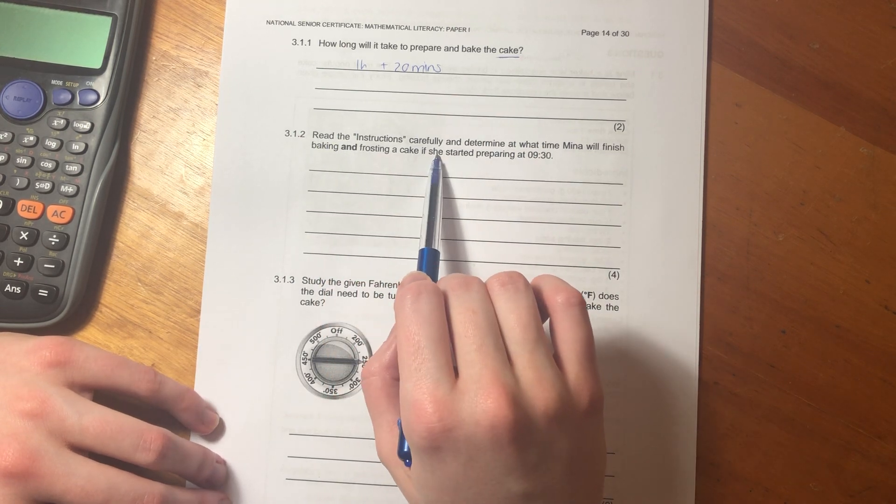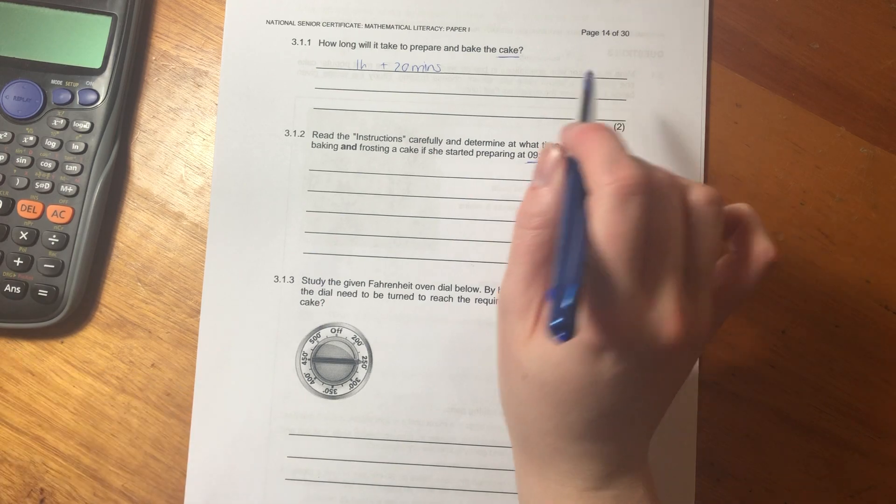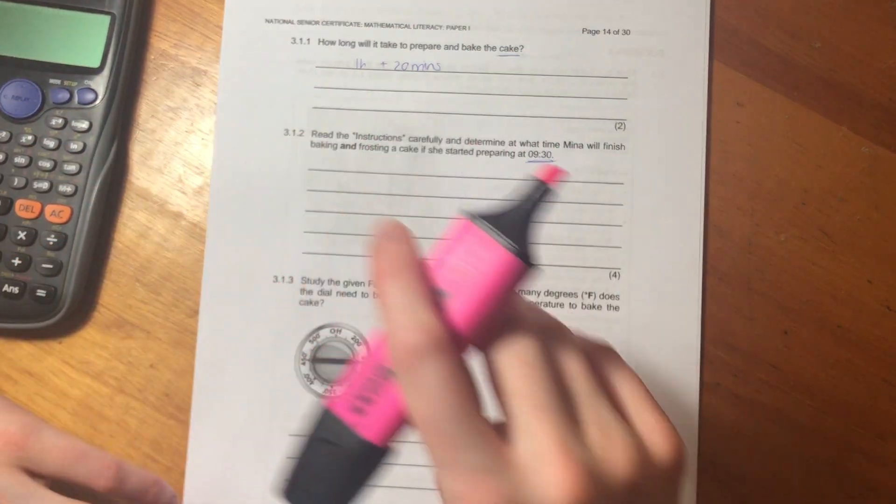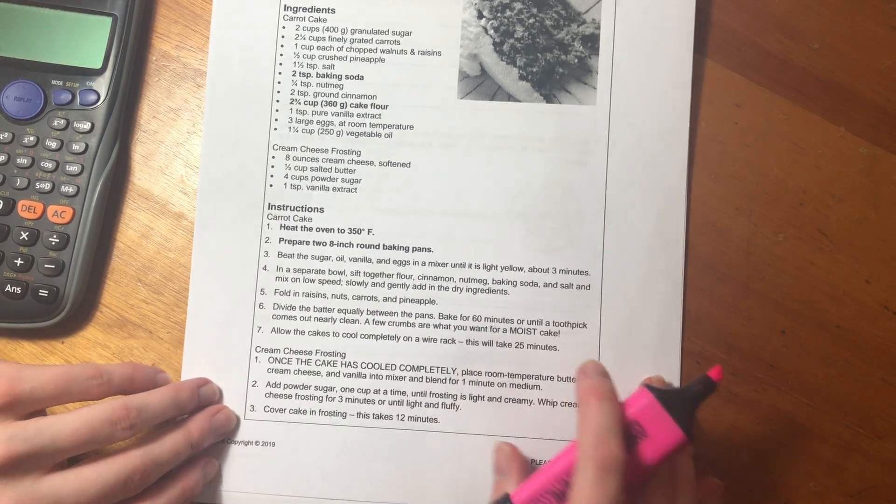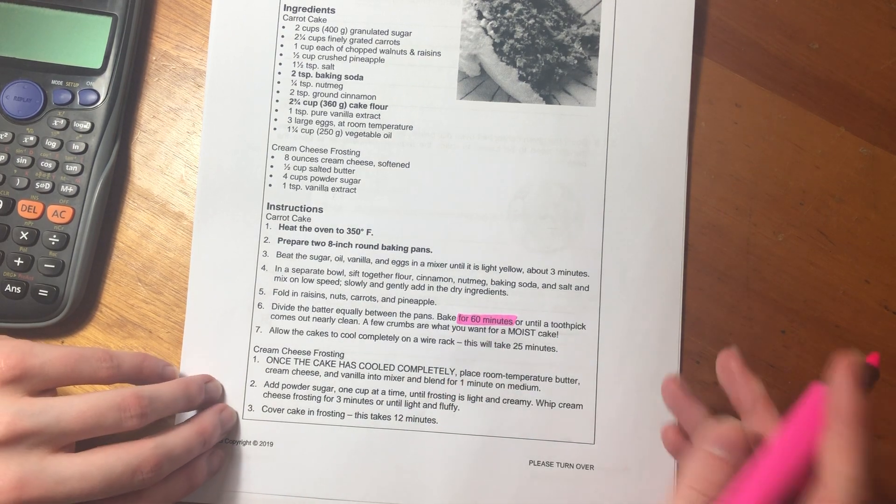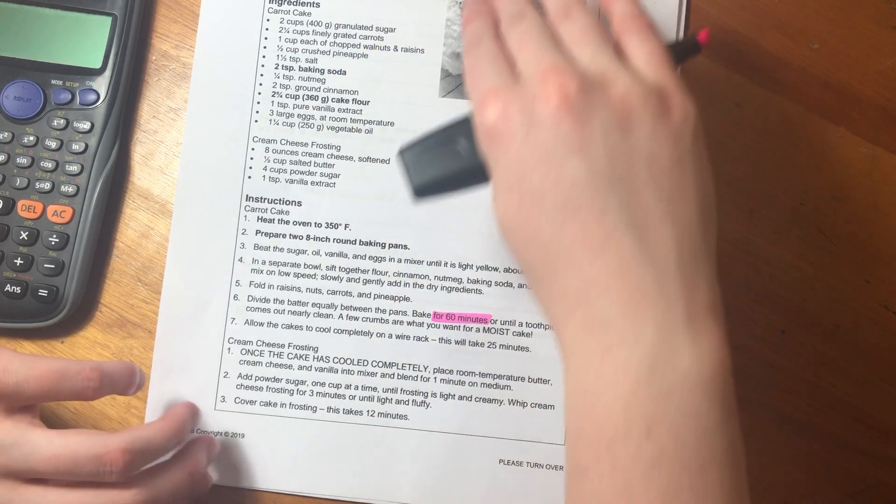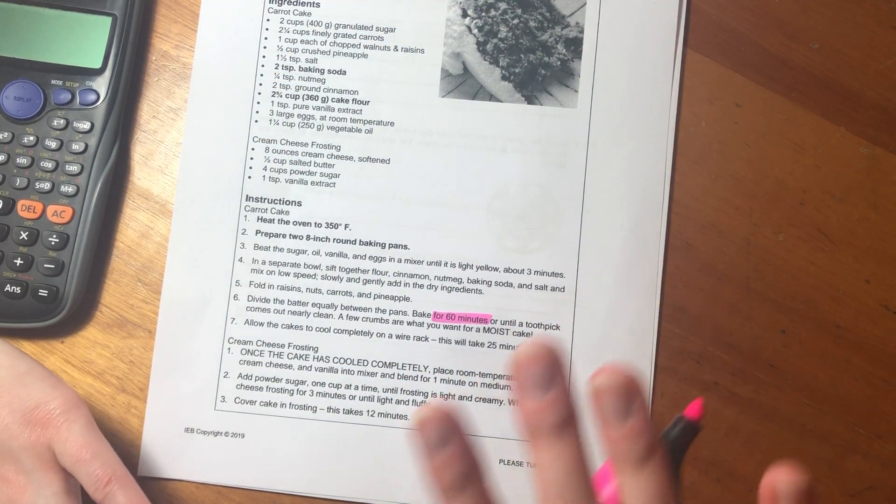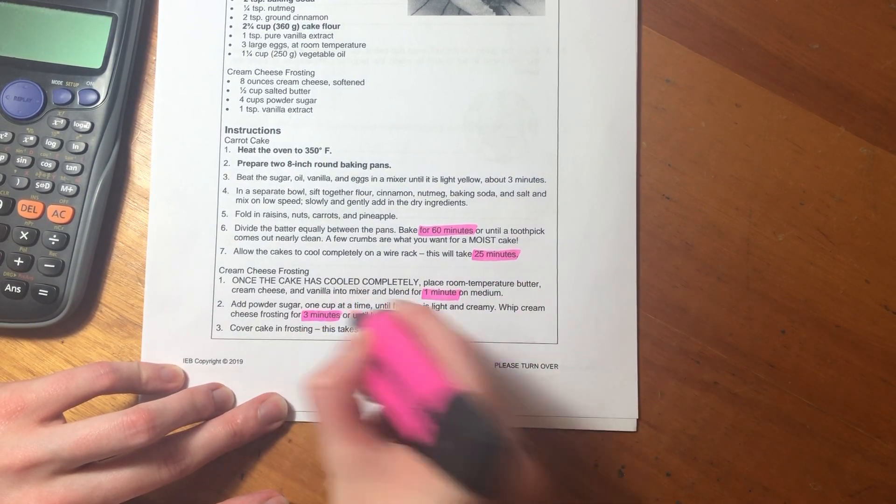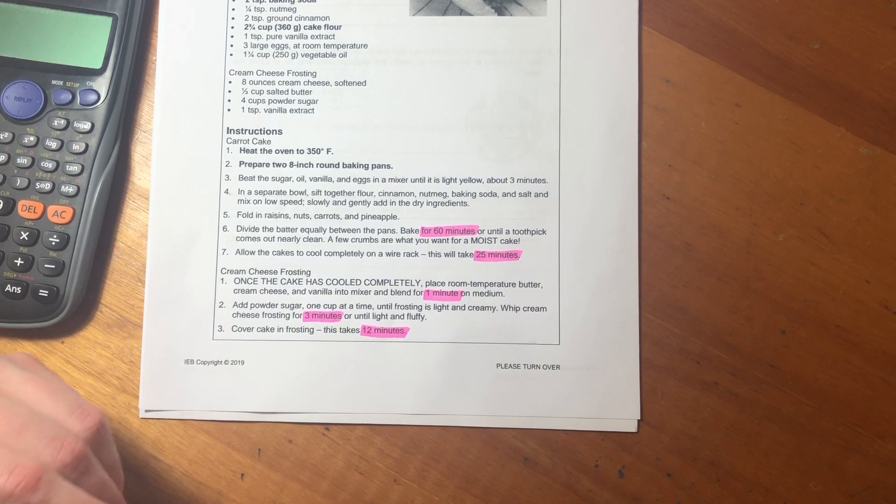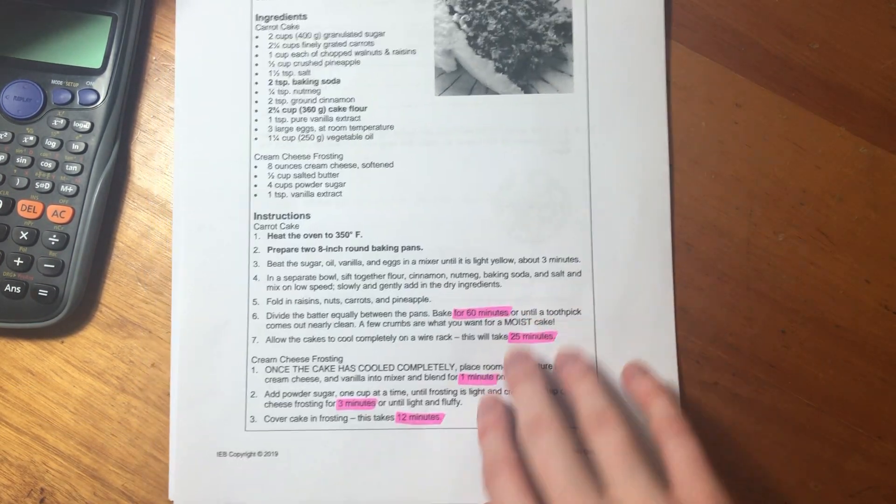Then it says read the instructions carefully and determine at what time Mina will finish baking and frosting, that's important, a cake if she started prepping at 9:30. Let's get a highlighter to help us understand exactly all the things that must be included in the time. We know prep time and cook time for the cake. But once the cake comes out, it says bake for 60 minutes. I'm just literally scanning over and looking for the word minutes. If you cannot do that the way I'm doing it, read every word. You have time to do that, don't stress.